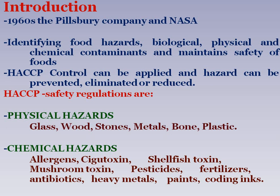The aim of HACCP is to identify food hazards — biological hazards, physical hazards, and chemical hazards — and maintain the safety of foods. HACCP control procedures can be applied so that hazards can be prevented, eliminated, and reduced from the food material. HACCP safety regulations address physical, chemical, and biological hazards.